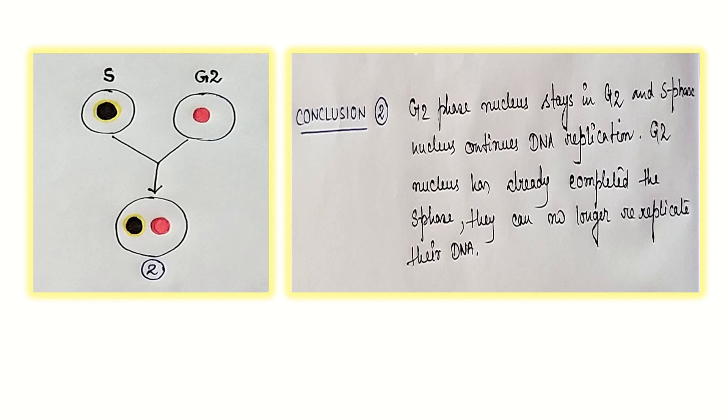It can only bind to nuclei which are undergoing the G1 phase allowing the DNA to move into S phase. Or in other words, we can say it promotes the DNA towards the synthesis phase. Once initiation has occurred, the MCM proteins are displaced so that replication cannot initiate again.